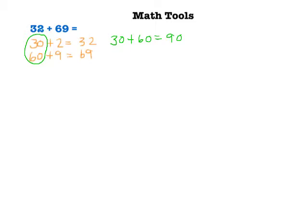Now we're going to solve the same math problem using two different math tools, but the same strategy. I'm going to begin by breaking these numbers into parts by place value. So 30 plus 2 equals 32. 60 plus 9 equals 69. Now I'm going to combine my 10s. 30 plus 60 equals 90. And then my 1s. 2 plus 9 equals 11.